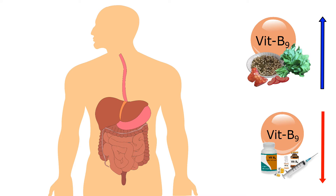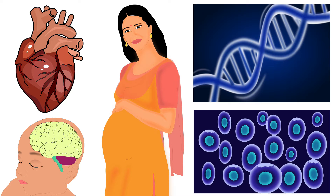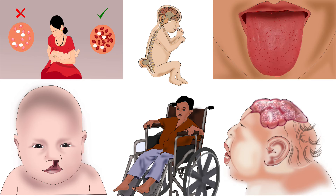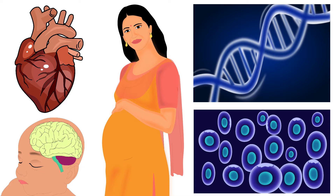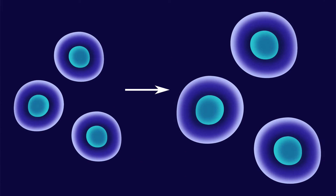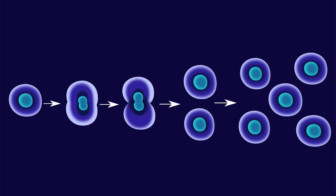Folate is more easily absorbed in our body compared to folic acid. We will now see the role of folate in our body and the effect of its deficiency. Folate is essential for various functions in our body. Our body needs it for growth, repair, division, and production of new cells.